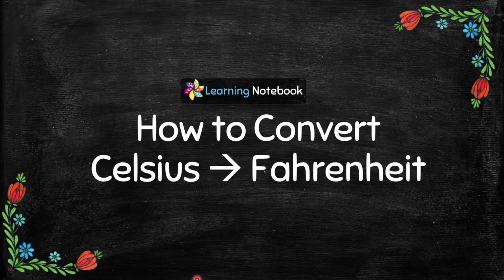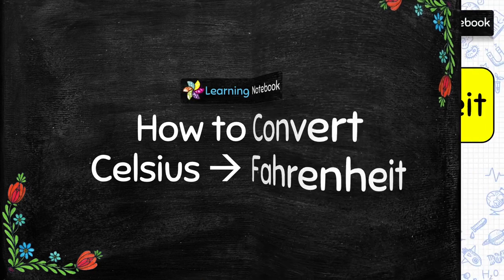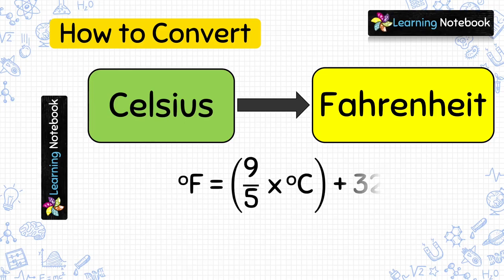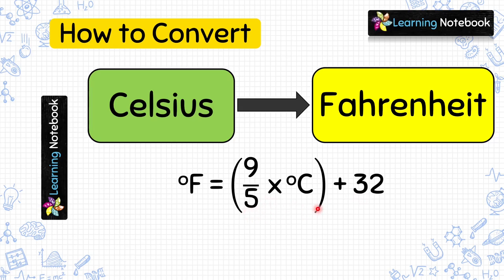Now students, I am sure you have learned the conversion of Fahrenheit into Celsius. Let's move and understand how to convert temperature given in Celsius into Fahrenheit. The formula to convert temperature given in Celsius into Fahrenheit is 9/5 into Celsius plus 32. This formula also has 2 parts: first we will do multiplication, and then we will add 32. Let's see how to use it to solve the questions.